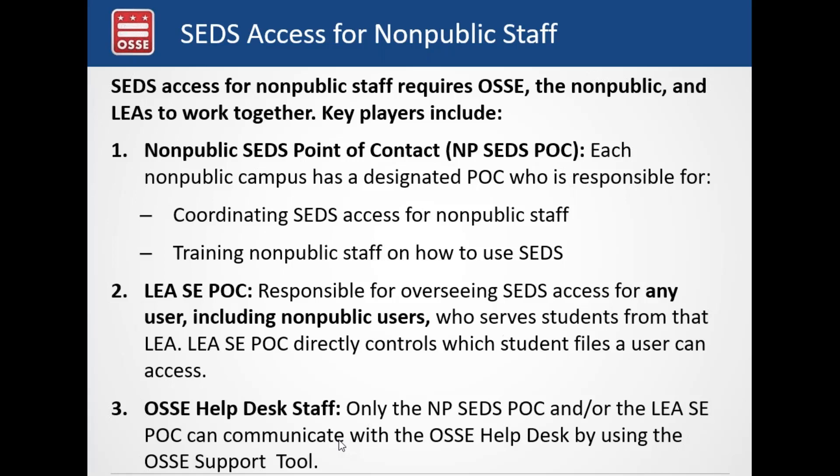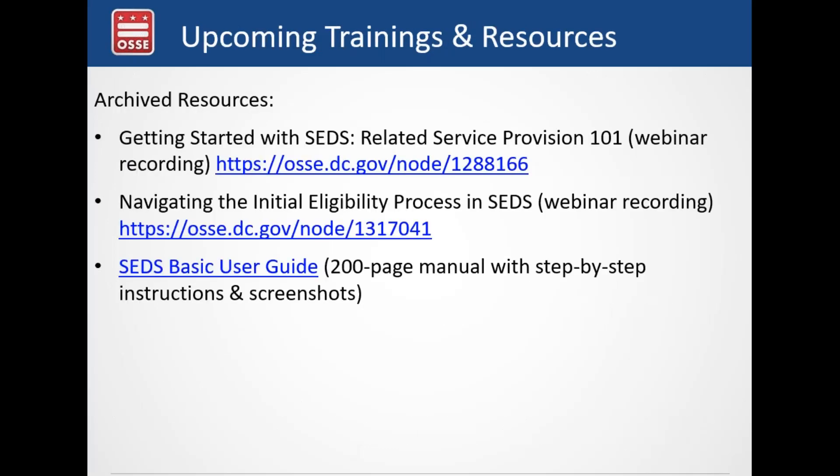Only the non-public SPED POC and the LEA SEPOC can communicate with OSI staff using the OSI support tool. Some non-publics are not getting access to their students, and LEAs need to help mitigate that frustration. The most common issue is that the LEA has not assigned the appropriate school to the user or has not assigned the student being serviced. If the school is assigned but the student is missing, make sure you're responding to non-public SPED POC emails. Archive resources available include: getting started with SEDS, related services provision 101 webinar, navigating the initial evaluation process, and the SEDS basic user guide — about 200 pages with screenshots and instructions.